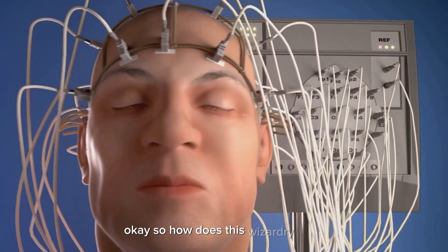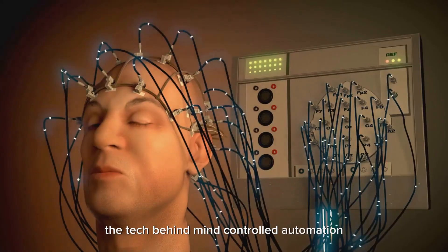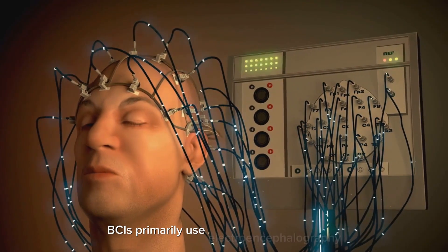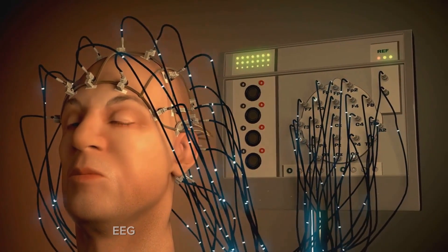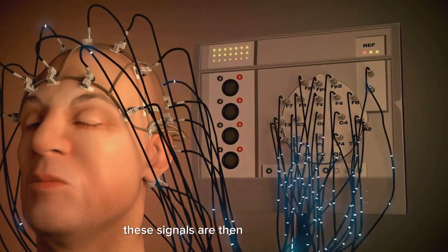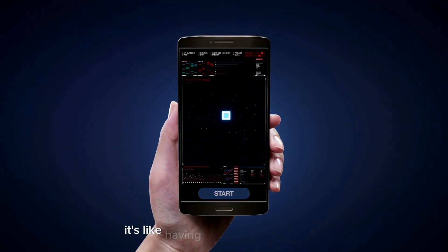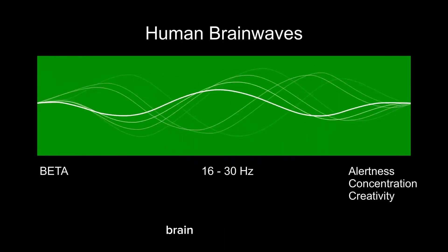Okay, so how does this wizardry work? Let's break down the tech behind mind-controlled automation. BCIs primarily use electroencephalography, EEG, to read electrical activity in the brain. These signals are then translated into commands that devices can understand. It's like having a direct line from your brain to your gadgets.